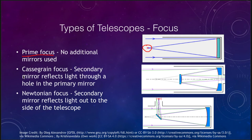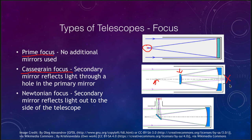The second type is the Cassegrain focus. Light bounces off the primary mirror heading toward a focal point, but a secondary mirror intercepts it and bounces it back through a hole in the primary mirror, bringing it to a focus right behind the mirror. This is convenient because you view the object from behind without blocking additional light — only a small secondary mirror is needed.